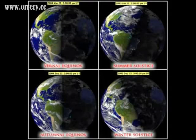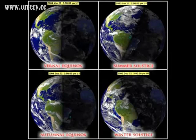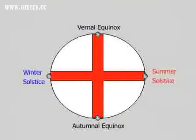The Earth's tilt is the reason we experience seasons. The seasons are defined by the Earth's orbit, which contains two solstices and two equinoxes. Looking at the solar system from above, the seasons naturally make a cross. Witcherink and Parlier call this the Earth Cross.